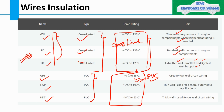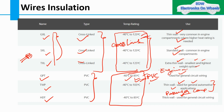For PVC insulation: GPT is used for general circuit wiring; TWP (thin wall) is used for general automotive applications in the passenger compartment where the temperature range is −40°C to 85°C. You cannot use GPT in the engine compartment because the engine compartment temperature exceeds 85°C — it can reach 105°C or 125°C. HDT (thick wall) is used for general circuit wiring.